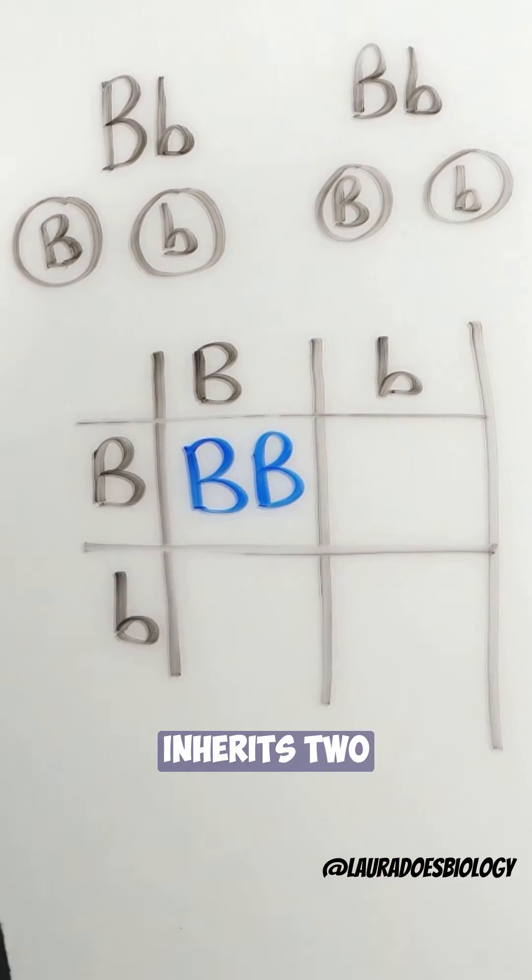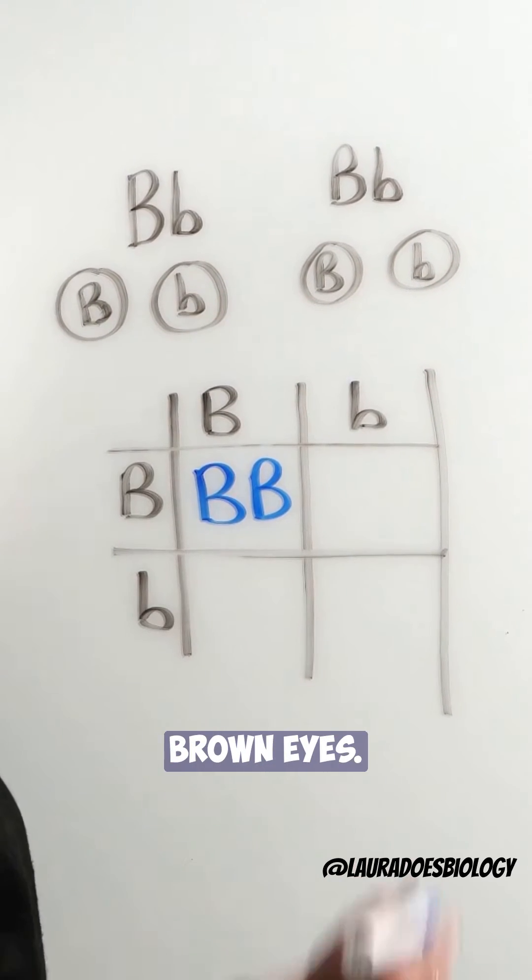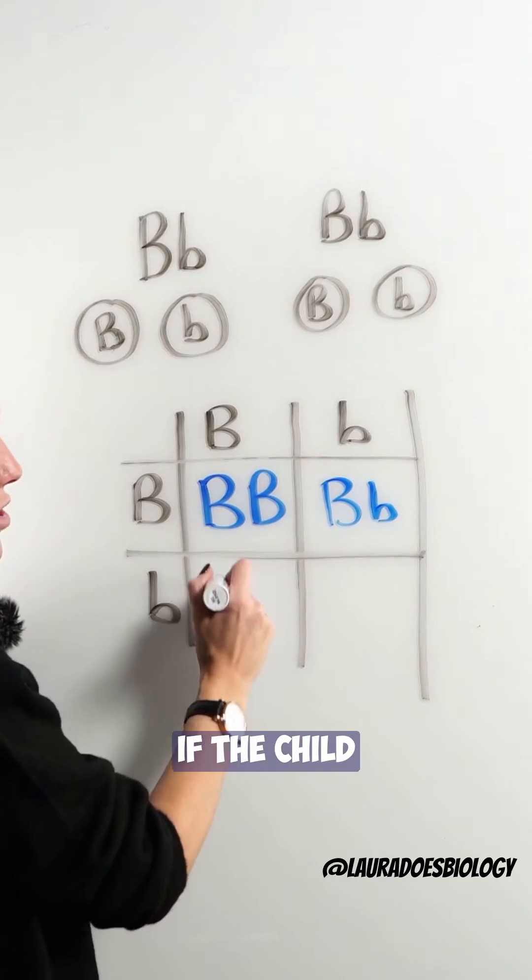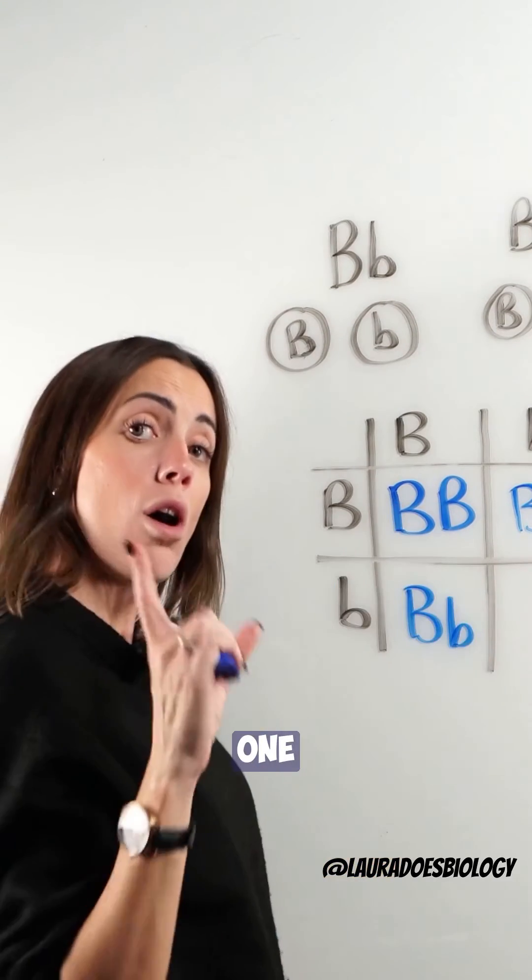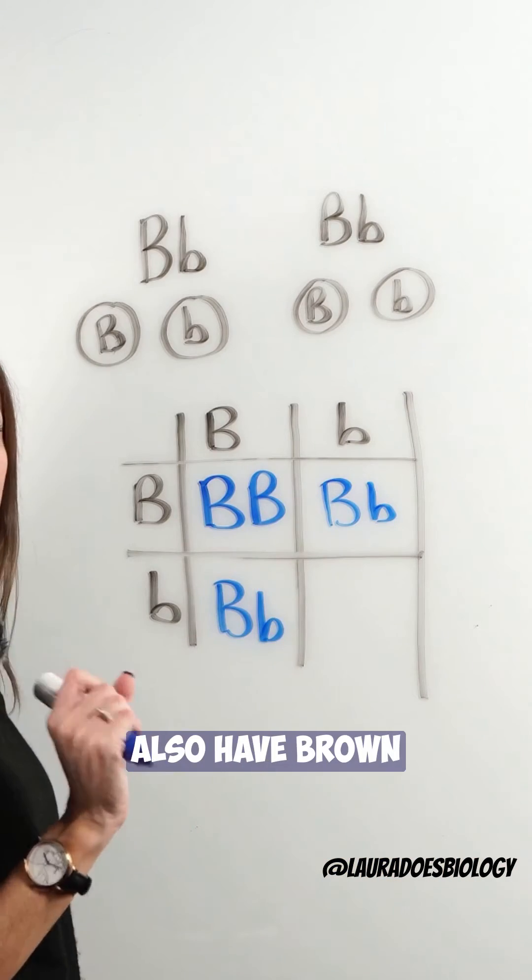If the child inherits two dominant brown-eyed alleles, they will have brown eyes. Equally, if the child just inherits one dominant brown-eyed allele, they will also have brown eyes.